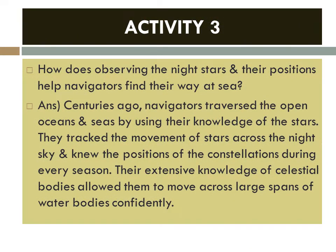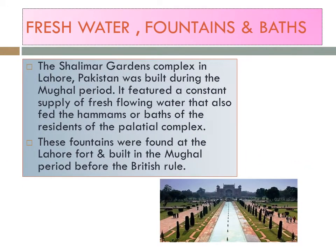Activity 3 from the textbook covers fountains and baths. The Shalimar Garden complex in Lahore, Pakistan was built during the Mughal period. It featured a constant supply of fresh flowing water that also fed the hammams, or baths, of the residents of the palace complex. These fountains were found at the Lahore fort and were built in the Mughal period before British rule. We have many such gardens in India too, which we commonly call Mughal gardens, especially in the Srinagar region of Jammu and Kashmir.